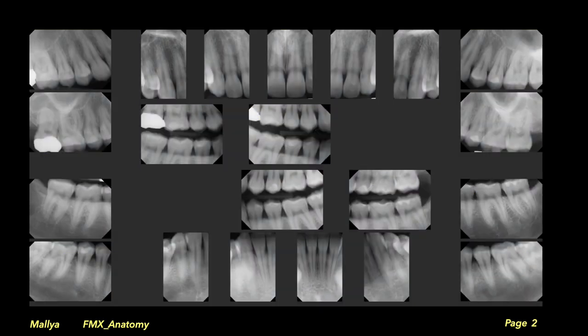Periapical radiographs should show the entire length of the root and at least two millimeters of the surrounding periapical bone. Bite-wing radiographs must demonstrate the interproximal surfaces of teeth with less than one-third overlap of the adjacent enamel. Additionally, you must be able to see the height of the alveolar crest. Note any abnormalities that might be incompletely imaged on this examination.